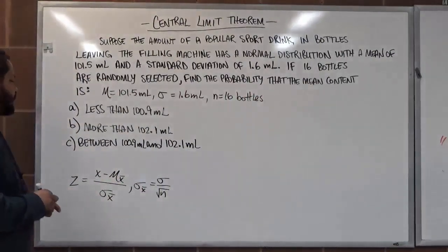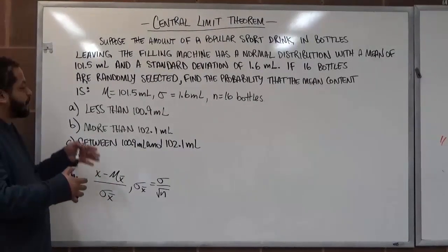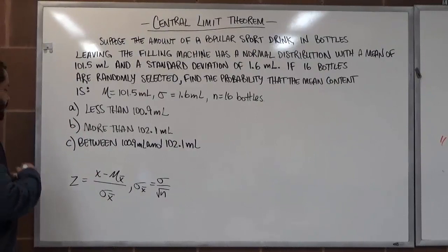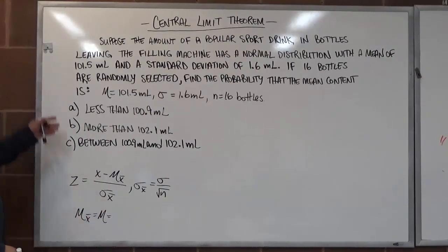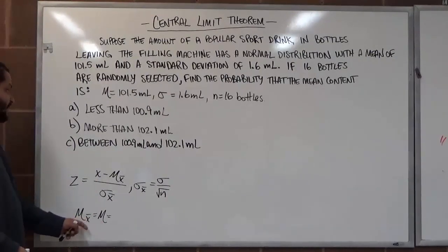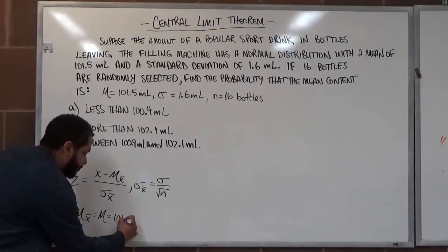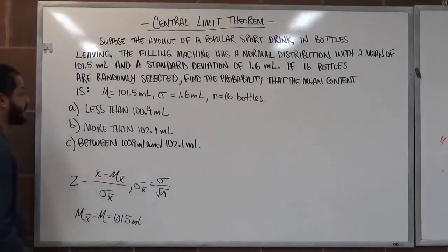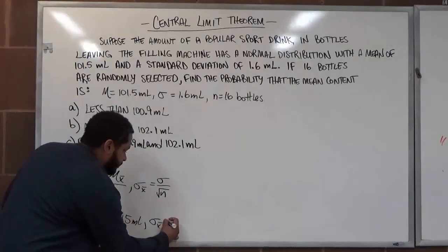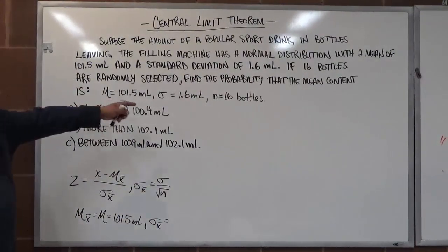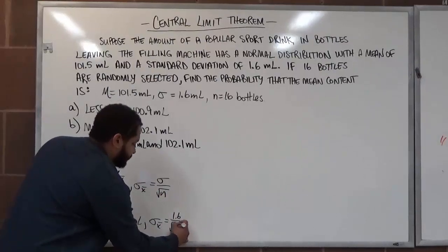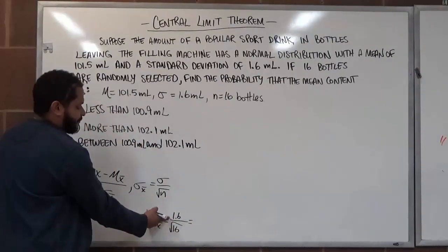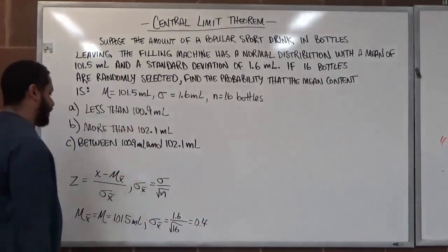Now that we have all three of these, we can determine μ_x̄ and our standard error. The mean of the sampling distribution, μ_x̄, is exactly what the population mean already is — it doesn't change. So here we have 101.5. Secondly, our standard error is the standard deviation divided by the square root of n: 1.6 divided by the square root of 16, which is 4. So 1.6 divided by 4 gives us 0.4. That is our standard error.